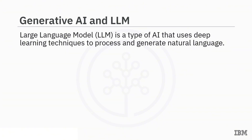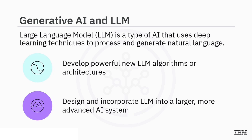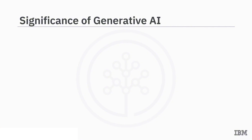A generative AI model can also use an LLM — large language model — a type of AI based on deep learning designed to process and generate natural language. Generative AI can develop new and more powerful LLM algorithms and architectures, resulting in more accurate or efficient natural language processing and generation. It can also design and incorporate LLMs into larger, more advanced AI systems to perform tasks such as decision-making, problem-solving, and creative work.